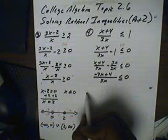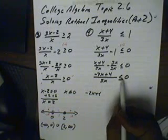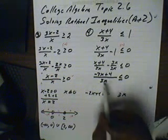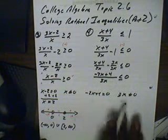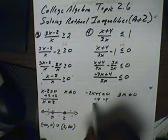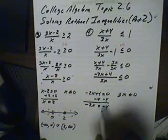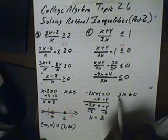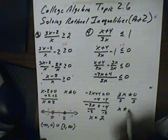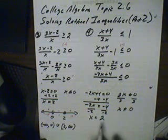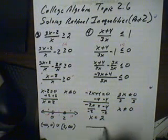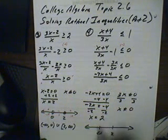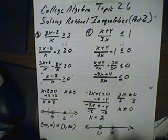Now let's remove the numerator, −2x + 4, and set it equal to 0 following the equality sign. The denominator, 3x, is always set not equal to 0. Solving: subtract 4 from both sides to get −2x = −4, then divide by −2 to get x = 2. For the denominator, dividing both sides by 3 gives x ≠ 0. So our two critical points are 0 and 2. We place them on the number line, with an open circle at 0 and a closed circle at 2.